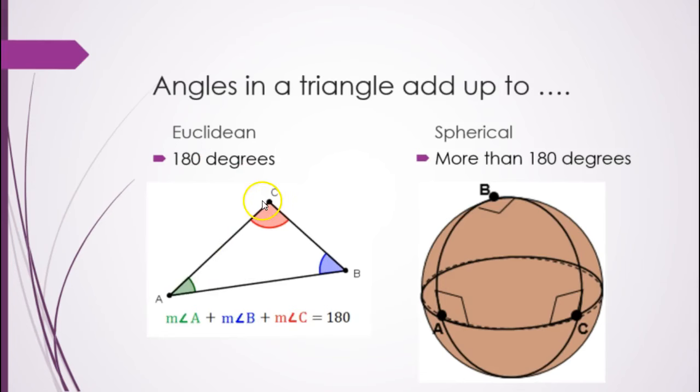In Euclidean, a triangle always adds up to 180 degrees. Here, though, if we look at this triangle made by these three lines, you can see that it's more than 180. In fact, this one could be made with three right angles. So it's always more than 180 in a triangle.